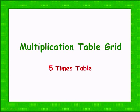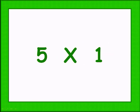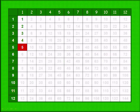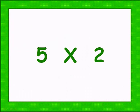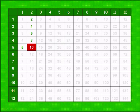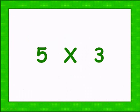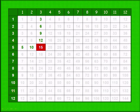Let's do our 5 times table. 5 times 1 is 5. Adding 5, 5 times 2 gives 10. Adding 5, 5 times 3 gives 15.